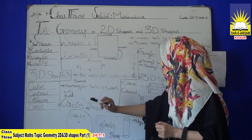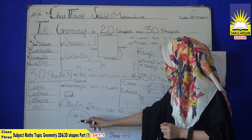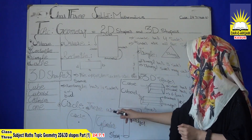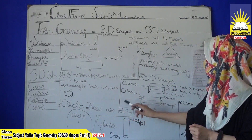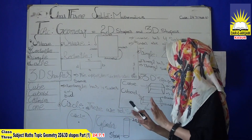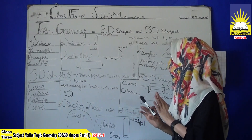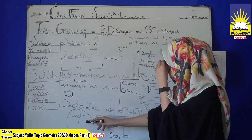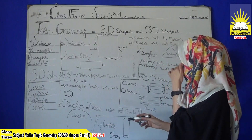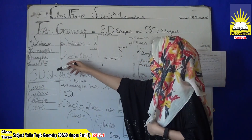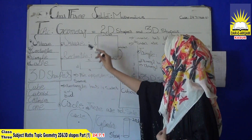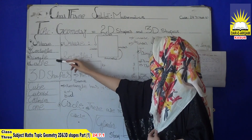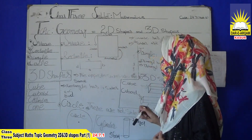Next we have a circle. This is called a circle. There are no sides in a circle — circle has no sides, no corners. These four shapes — square, rectangle, triangle, and circle — are 2D shapes.